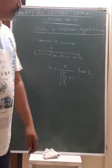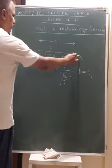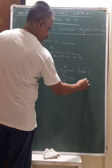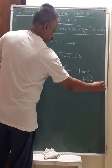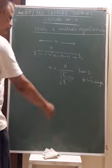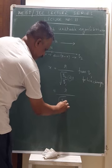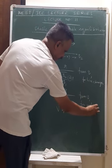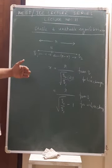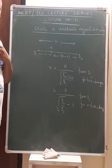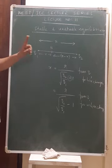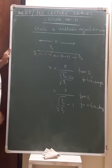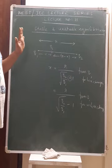This is already discussed. If one of them is negative — that is, for unlike charges — the formula becomes r divided by (√(Q2/Q1) − 1) from Q1. For like charges, you can find the location of the null point. The null point is the point where the net electric field is zero, and if you keep any other charge q₀ there, this charge does not experience any force.